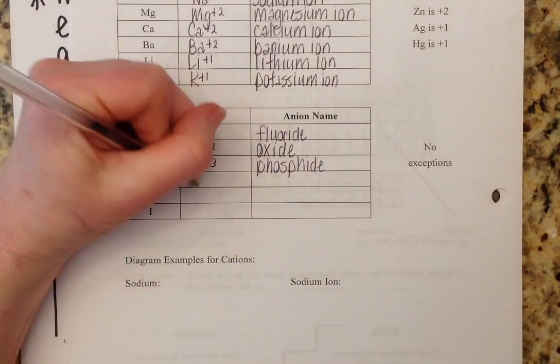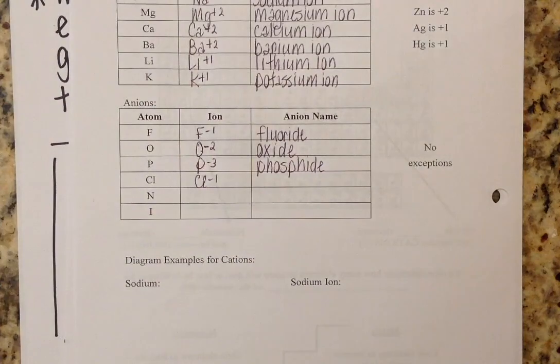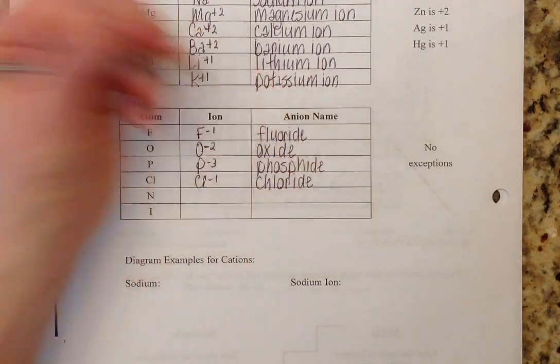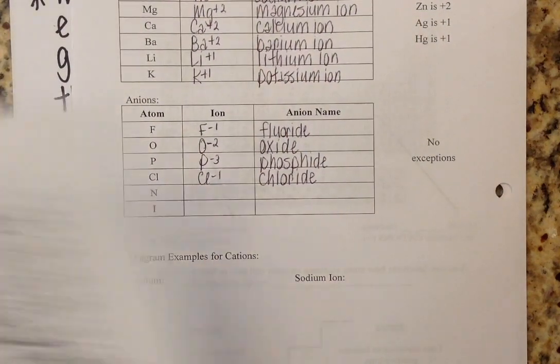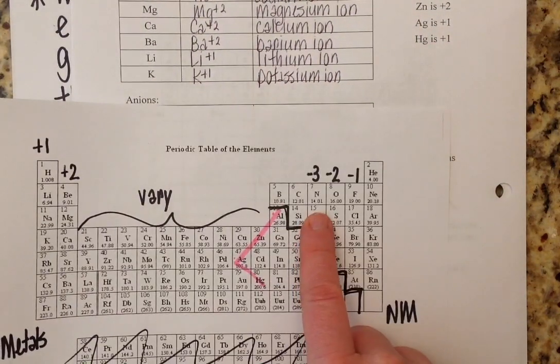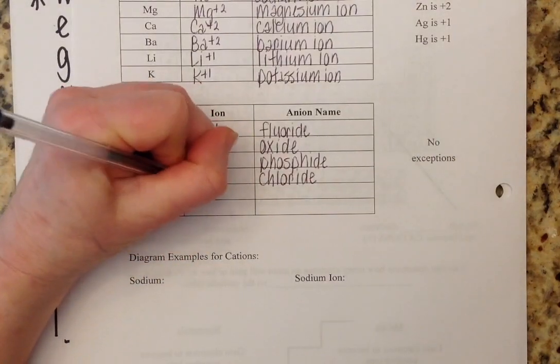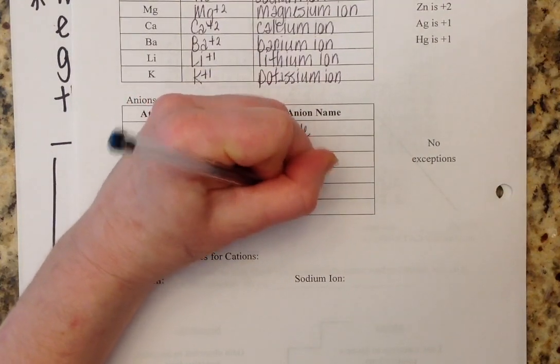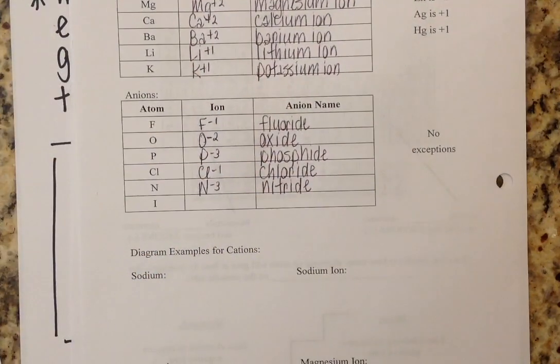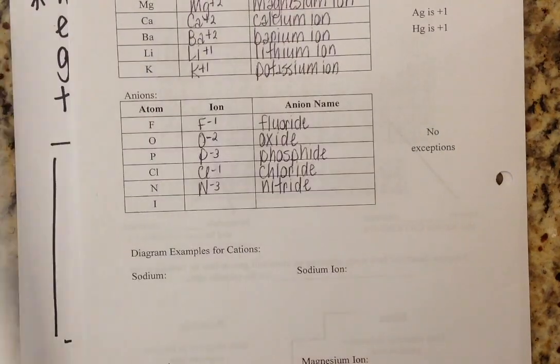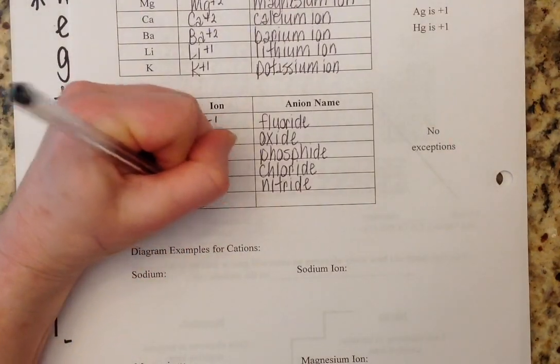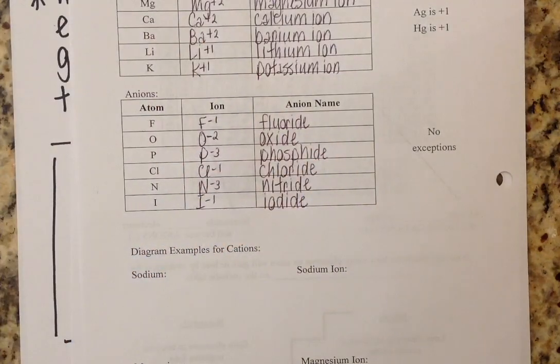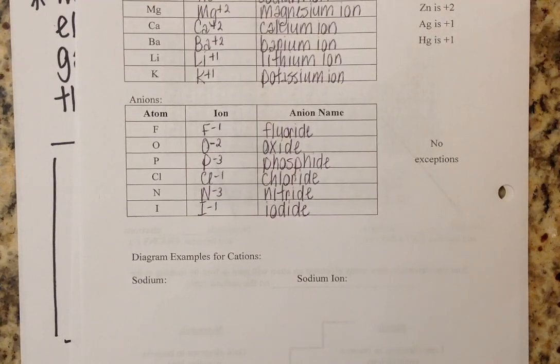Chlorine has a negative one charge. Therefore, chlorine becomes chloride. Nitrogen has a negative three charge. Nitrogen becomes nitride. And iodine has a negative one charge. And iodine becomes iodide. So those are your basic rules for anions and cations.